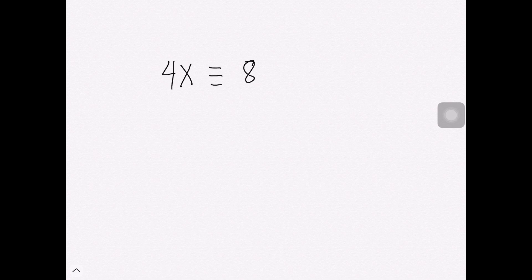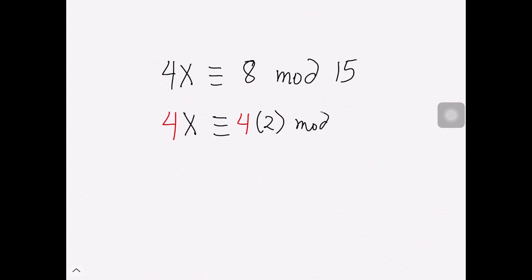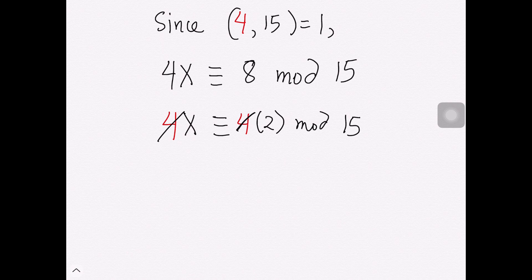Applying this to the congruence 4x ≡ 8 (mod 15), we can factor out the 4 and write it as 4x ≡ 4 × 2 (mod 15). Since 4 and 15 are relatively prime, we cancel out the 4 and solve: x ≡ 2 (mod 15).